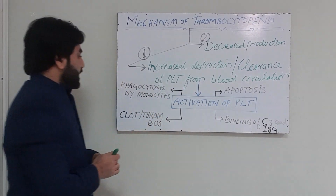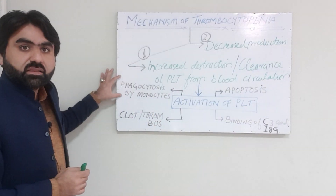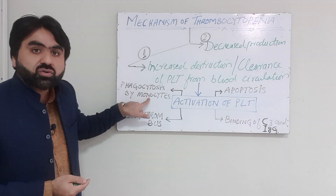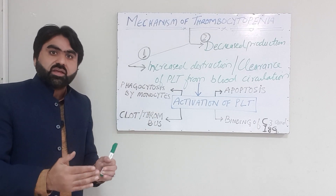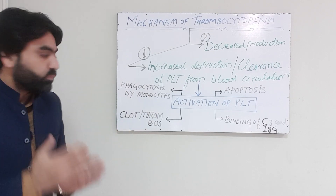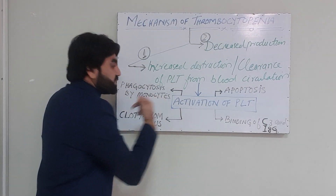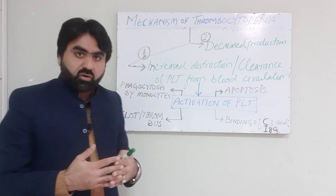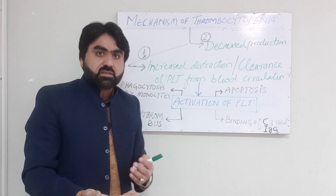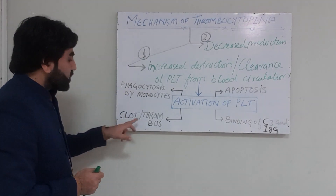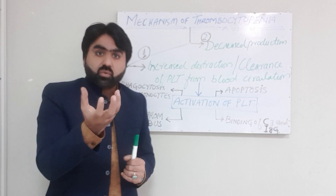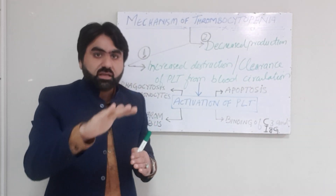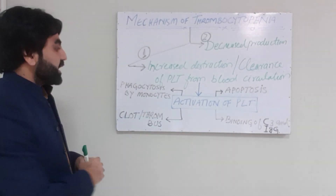Activation of platelets also results in increased phagocytosis of these activated platelets by monocytes, which further results in depletion of platelets. Additionally, activated platelets start forming clots or thrombi inside the vascular system, and this clot formation sequesters platelets from normal blood circulation, resulting in a decreased platelet count.